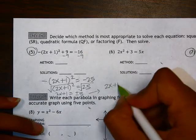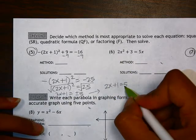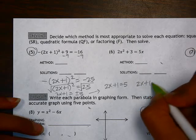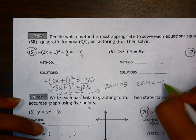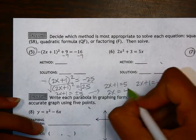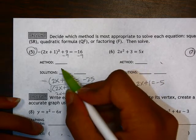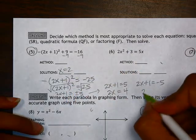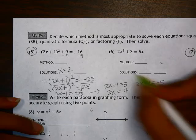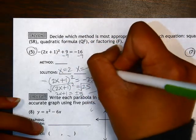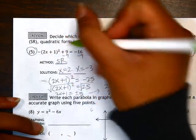2x plus 1 equals 5 will give us one solution. 2x plus 1 equals negative 5 will give us another solution. So over here, one of our solutions is x equals 2 and then over here we get another solution of x equals negative 3. And we used the square root method.